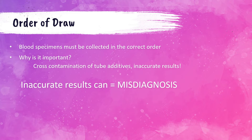A lot of students ask me why the order of draw is so important and what happens if it isn't done properly. The issue of drawing out of order is that it can lead to cross-contamination of the additives in each different tube, which can ultimately lead to inaccurate results for the patient. Anytime you have inaccurate results, there's a legitimate risk that the patient could be misdiagnosed. For example, there is a tube that contains potassium and also chelates or sucks up calcium in the blood to prevent the sample from clotting.